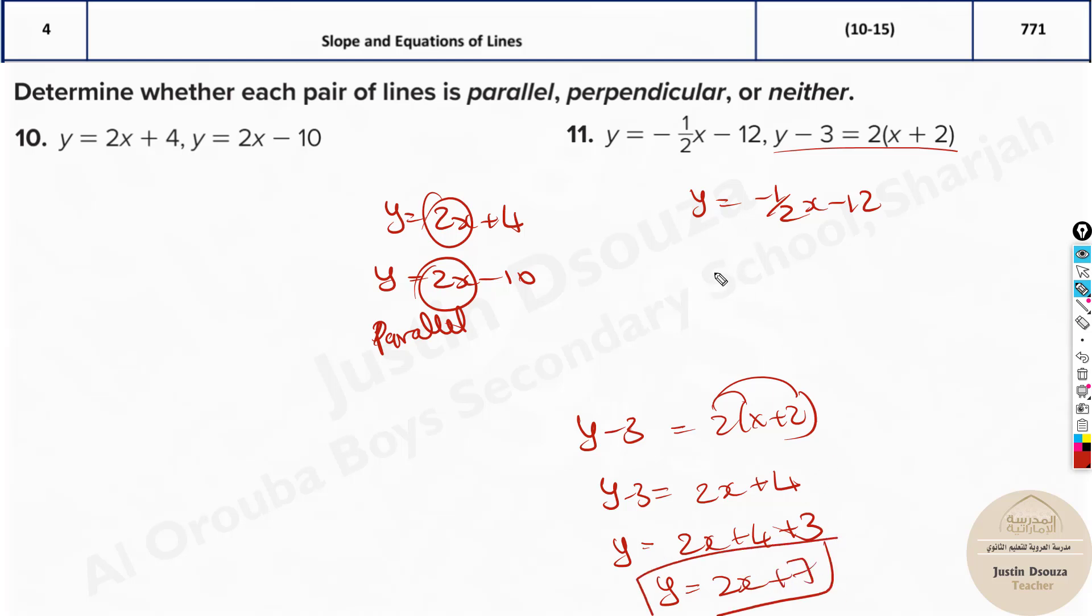Now, let's write y equals 2x plus 7. The slopes are different: negative one-half and positive 2. Obviously, they cannot be parallel. Only if slopes are the same are they parallel. What we do is multiply the slopes together: negative one-half times positive 2 equals negative 1. When we multiply and get negative 1, that means they are perpendicular to each other. That's the answer.